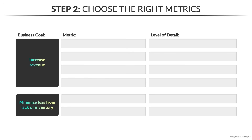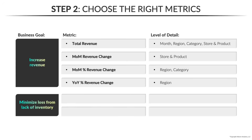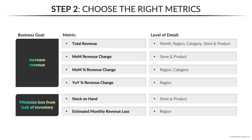For the business goal of increasing revenue, some metrics we might want to track include total revenue by month, by region, category, store, and product, as well as month-over-month and year-over-year comparisons to add meaningful context. For the goal of minimizing loss from lack of inventory, we'd want to track stock on hand at the product level for each store and estimate the monthly revenue loss based on what we would have expected had those products been in stock.